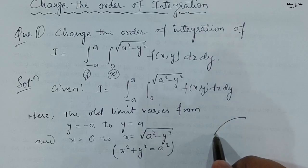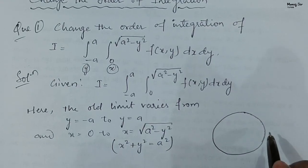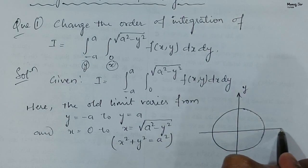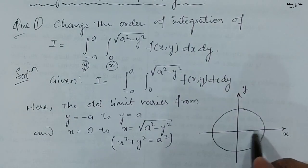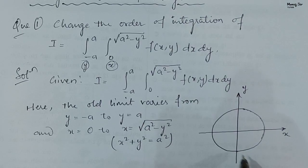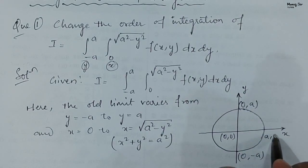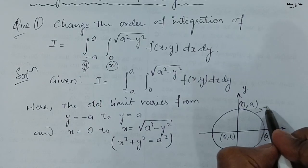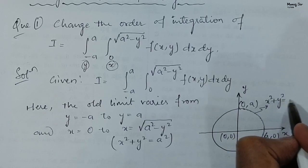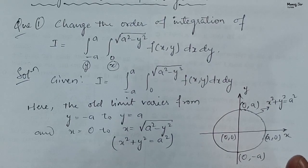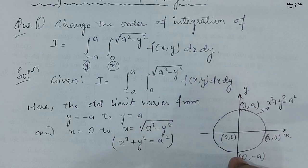We draw a circle with the y-axis and x-axis. With radius a, we have the points: (0, minus a), (0, a), origin (0, 0), and (a, 0). The equation of the circle is x squared plus y squared equals a squared. Now we need to draw a strip — either horizontal (parallel to x-axis) or vertical (parallel to y-axis).